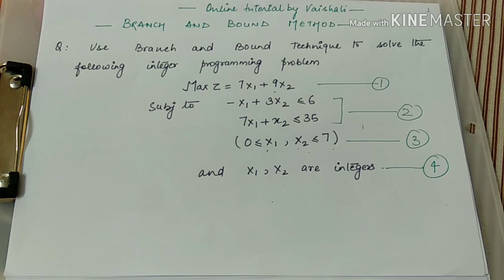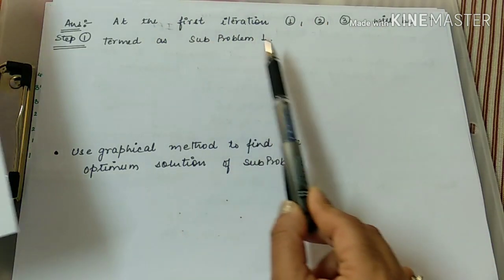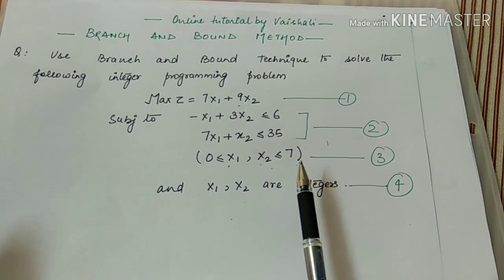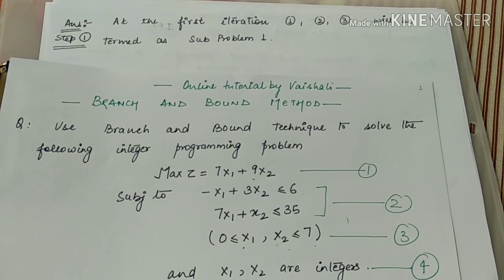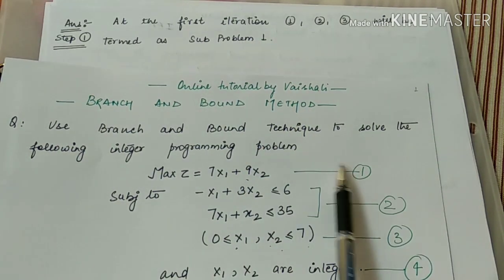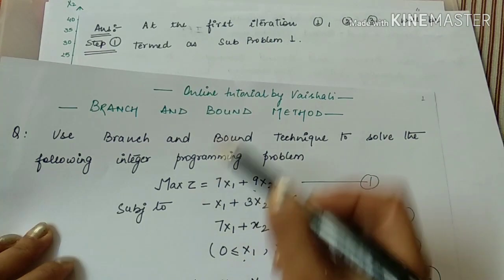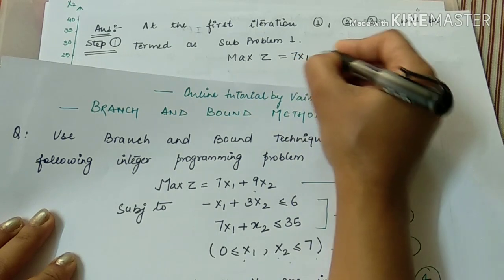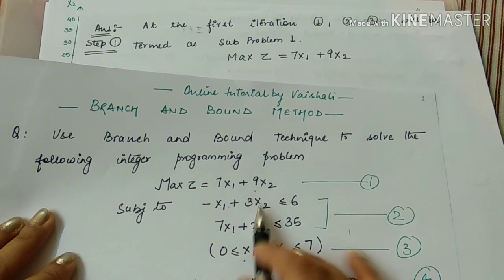At the first iteration, equations 1, 2, 3 will be termed as sub-problem one. We make sub-problem one to analyze its result. The sub-problem one contains the objective function: max of z equals 7x1 plus 9x2, and the two constraints: minus x1 plus 3x2 is less than or equal to 6, and 7x1 plus x2 is less than or equal to 35.